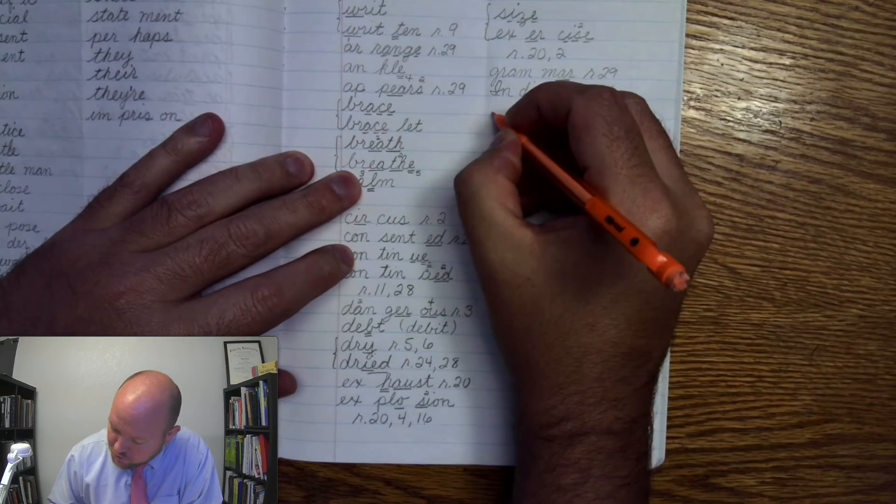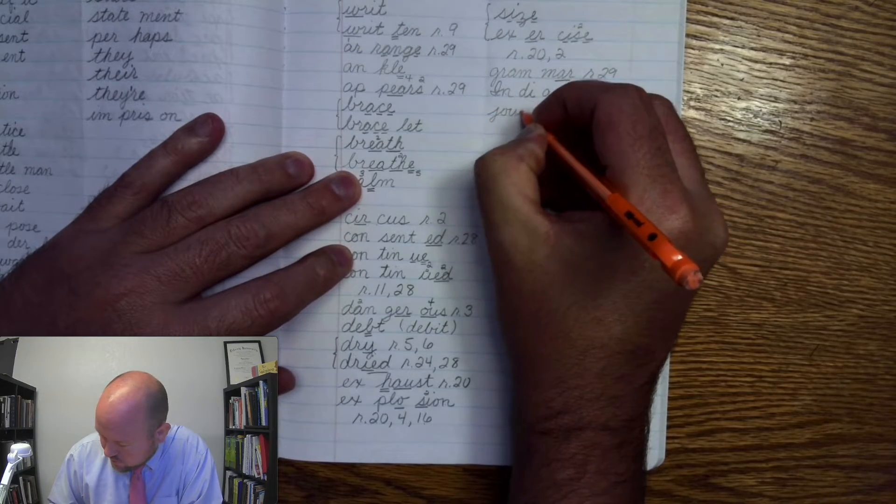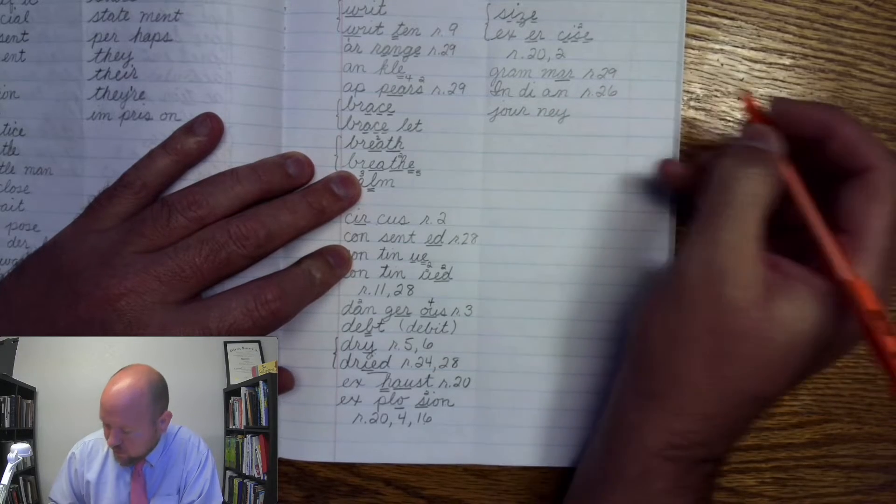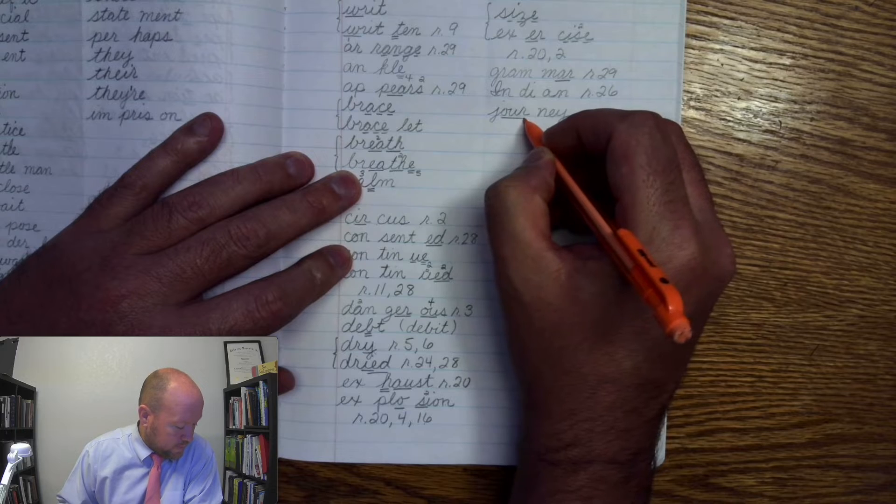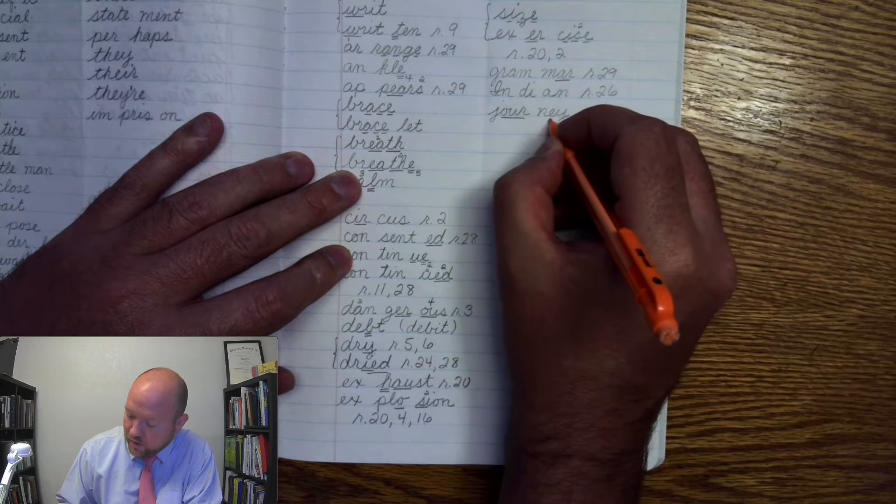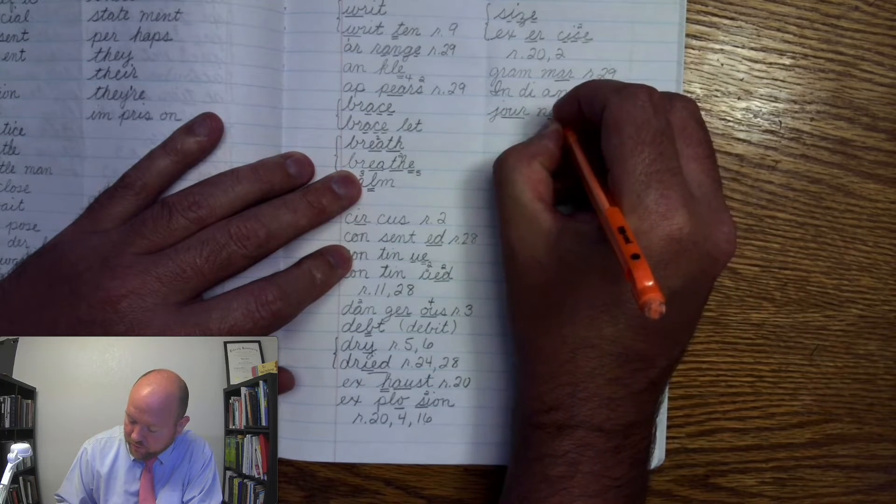Write it. Jur. Ni. Markings. J, ur-once. N, I-once. Three.